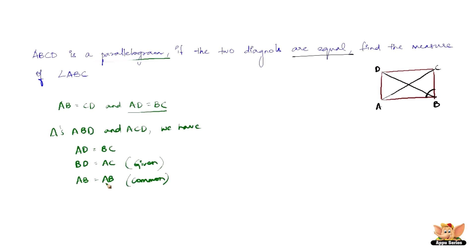so by SSS criterion, side-side-side criterion, we have triangle ABD is congruent to triangle ACB. And therefore, we can write that angle BAD equals angle ABC. How is this?